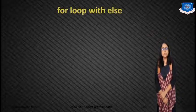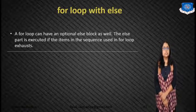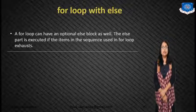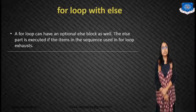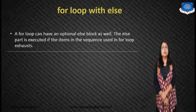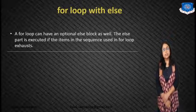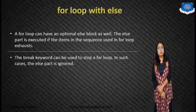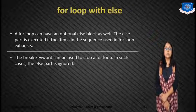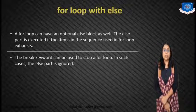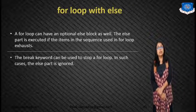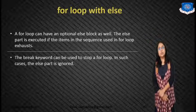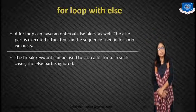Next we will discuss for loop with else. A for loop can have an optional else block. The else part is executed if the items in a sequence used in the for loop are exhausted, that means used up. The break keyword can be used to stop the for loop. In such case, the else part is ignored. Like in while, we have discussed the same thing: while with else. If we use the break statement inside the while, then the else part is ignored. Here also the same thing.